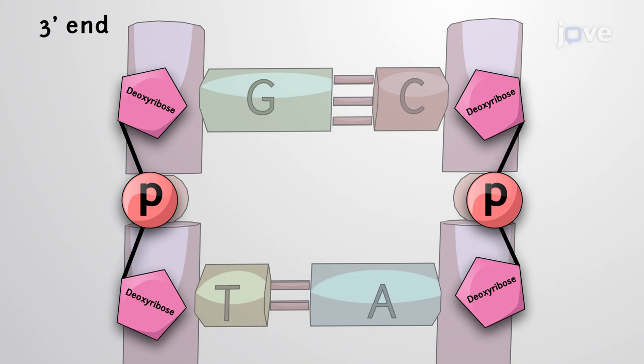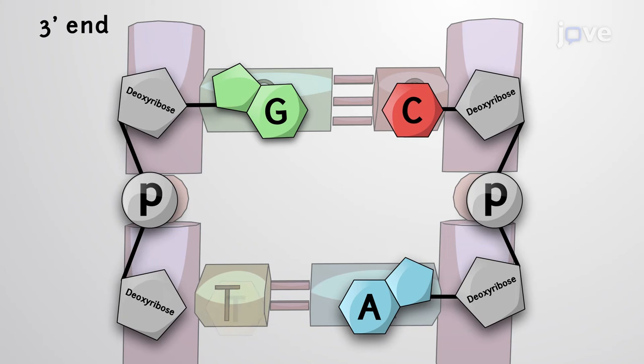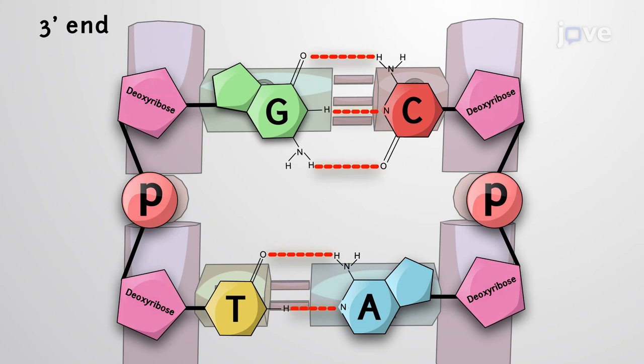Using anti-parallel strands, each base is uniquely paired: C with G, and A with T, thanks to differences in the number of hydrogen bonds that form between them. This complementary side terminates with a phosphate group at the 5' end.